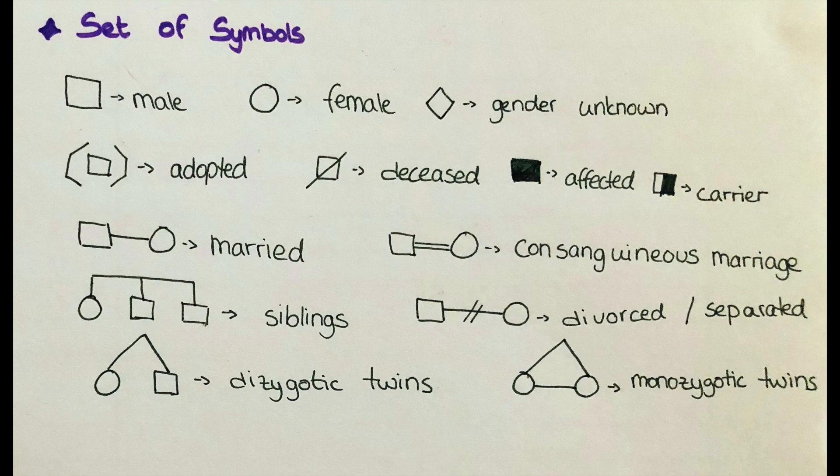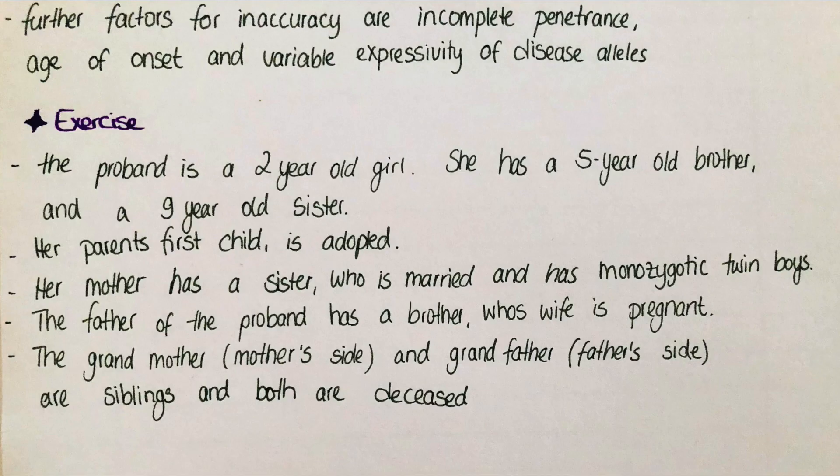Twins can also be indicated — either monozygotic or dizygotic, meaning from one or two eggs. Then I drew an exercise, just in case you're curious to try drawing one of these pedigree charts yourself. We have a two-year-old girl who is the proband, so she will be indicated with an arrow.